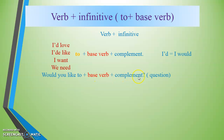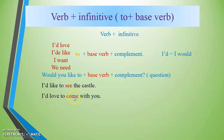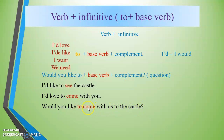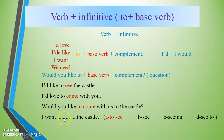Examples using verb + infinitive: 'Would you like to come with us to the castle?' — 'I'd love to come with you.' — 'I'd like to see the castle.' — 'I'd love to come with you.' These show verb + infinitive in use.